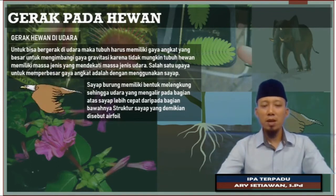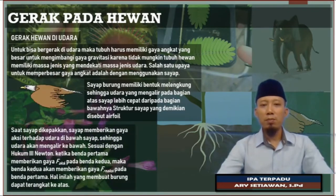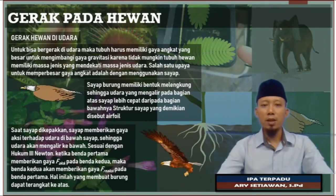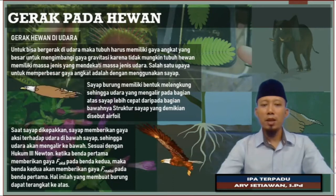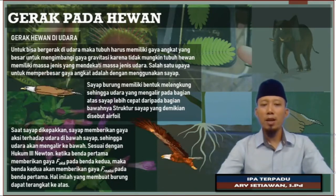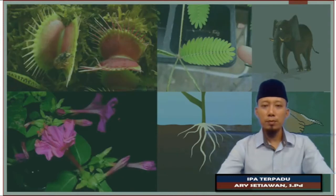Kalau kita mengulas kembali mata pelajaran sebelumnya, prinsip dari gaya angkat burung atau hewan udara ini menggunakan prinsip hukum 3 Newton, yaitu F-aksi sama dengan F-reaksi. Bahwa saat sayap dikepakkan, sayap memberikan gaya aksi terhadap udara di bawah sayap, sehingga udara akan mengalir ke bawah.